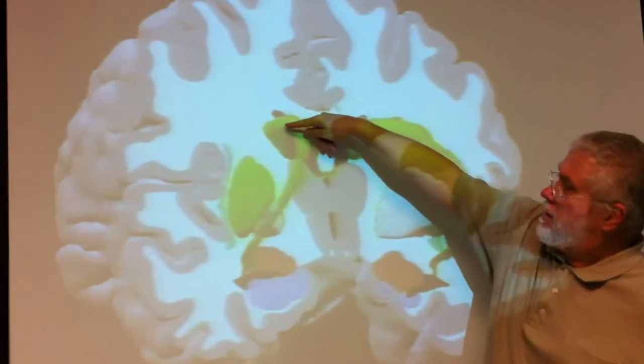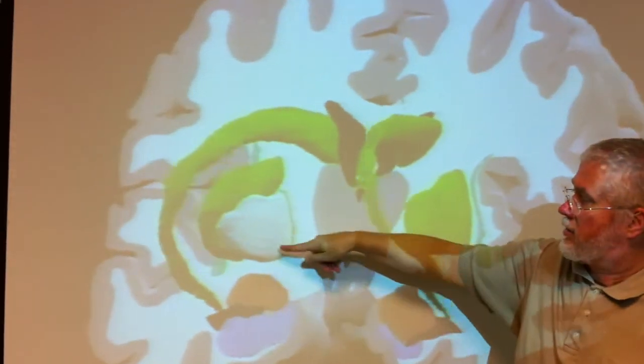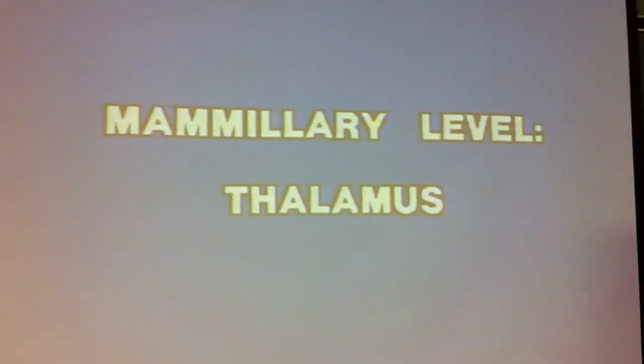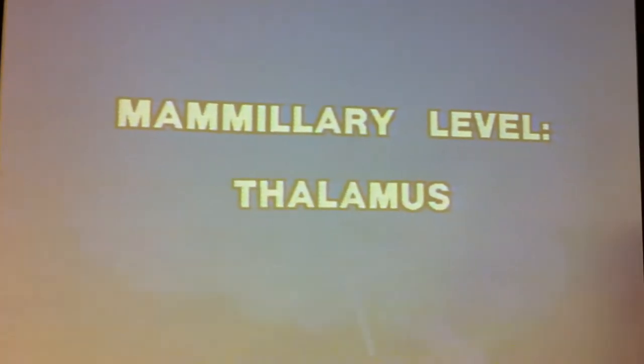So here you can see caudate, globus pallidus, putamen. Does that make up striatum? Those three things? I guess so. It looks like a color, you know.